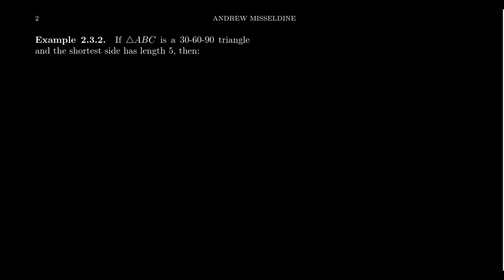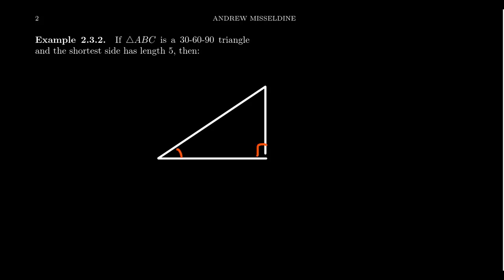For example, if you have a 30-60-90 triangle ABC and its shortest side is length 5, we can draw the picture: a right triangle with a 30-degree angle, a 60-degree angle, and the shortest side of length 5 opposite the 30-degree angle. Since the bigger the angle the bigger the opposite side, the hypotenuse will be 2 × 5 = 10. The side opposite the 60-degree angle is the short side times the square root of 3, giving 5√3.